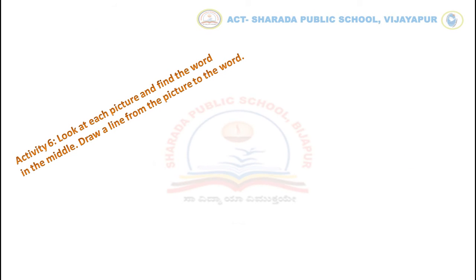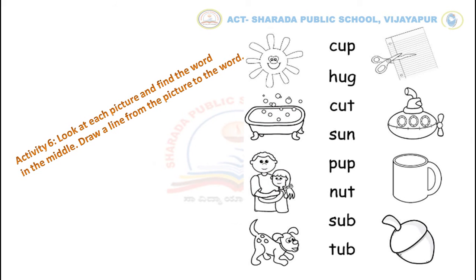Ok children, let us move to the next activity. Look at each picture and find the word in the middle. Children, draw a line from the picture to the word. Here, first read the words and then identify the pictures to match. For example,